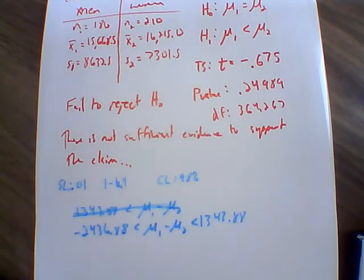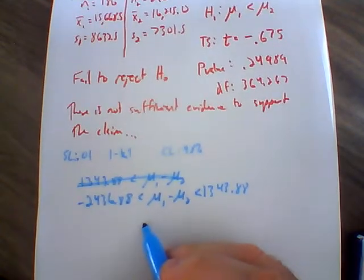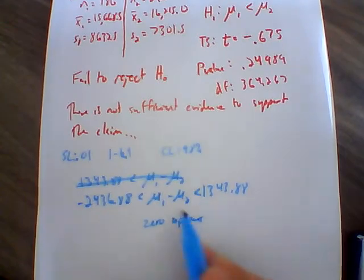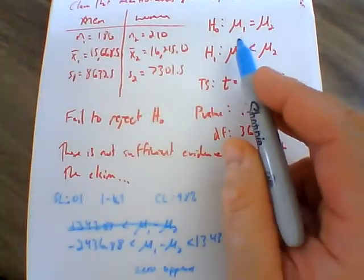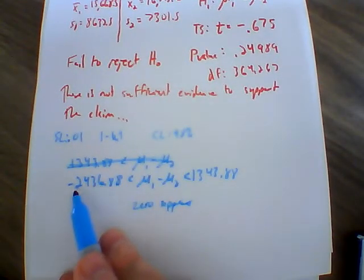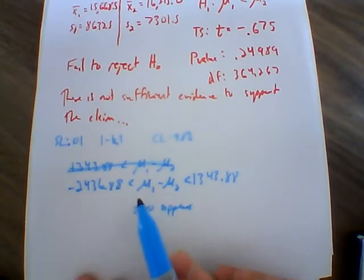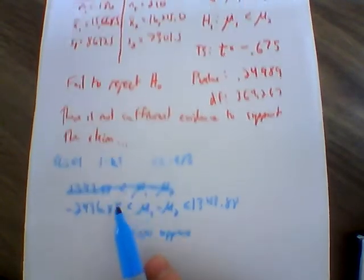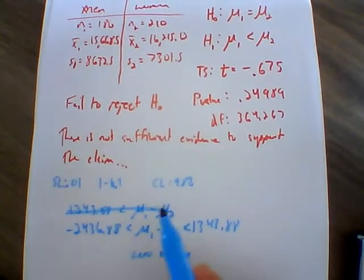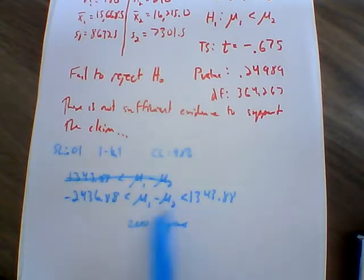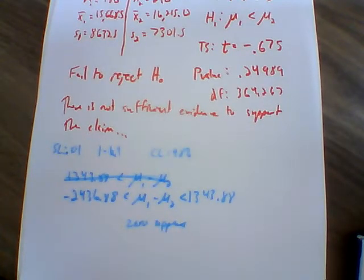Looking at this confidence interval, we see that 0 appears within the interval. That means we are showing signs of equality. Even though we see more negative numbers, suggesting men might speak a little bit less, there is no proof towards that. We look for that 0 that appears within the interval — and here it does appear — confirming our conclusion from the hypothesis test.